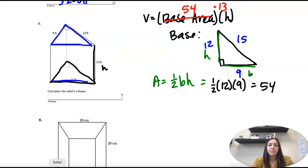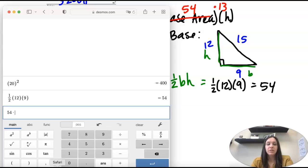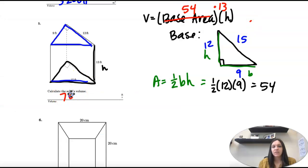And then the height is 13. So 54 times 13 is 702, and we're not rounding, there's nothing to round, it's just exact. So 702 and it's cubic feet because it's volume.